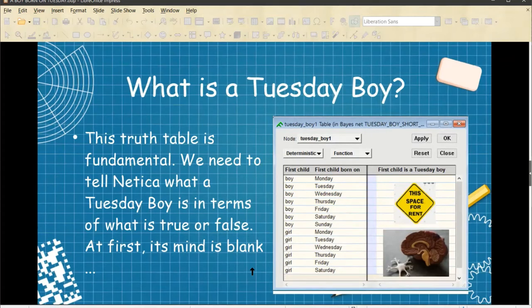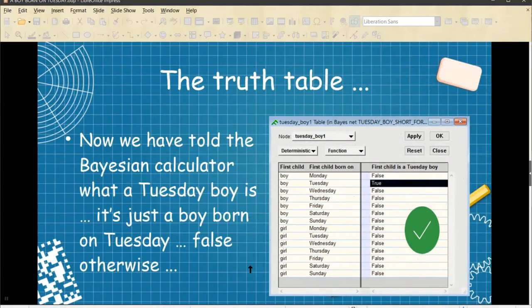But we need to specify that. We need to tell Nereka what is a Tuesday boy anyway. So this truth table is fundamental. This is part of its brain. We need to tell Nereka what a Tuesday boy is in terms of what is true or false. At first, its mind is blank. Now, we simply enter the following facts. We simply say, if the first child is a boy and born on Monday, then first child is a Tuesday boy is false. If, on the other hand, the first child is a boy but born on Tuesday, then the first child is indeed a Tuesday boy. Anything else makes this truth table false.